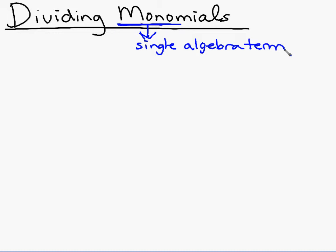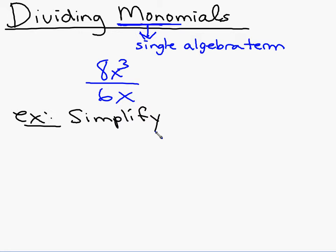When we see the prefix mono, it means one, so a monomial is one algebra term. When dividing monomials, we have one algebra term over another, like 8x³ over 6x. That's an example of the problems we're going to see today. I've got about nine or ten examples for us to work through. Let's start with this first problem.